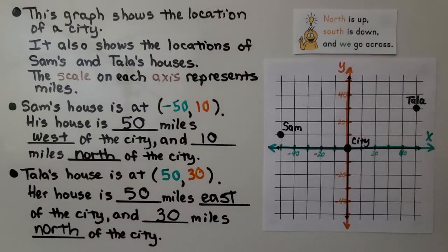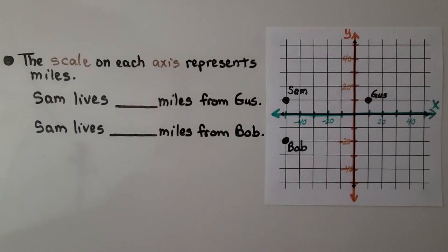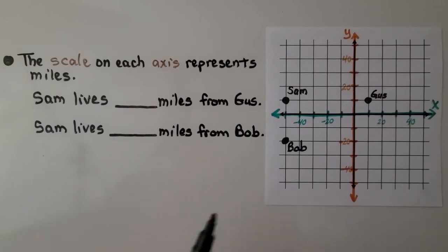So, we can look at a coordinate plane as if it's a map. And we can see locations and use the increments as miles, or it could be feet or meters, even. So, here again, the scale on each axis represents miles.